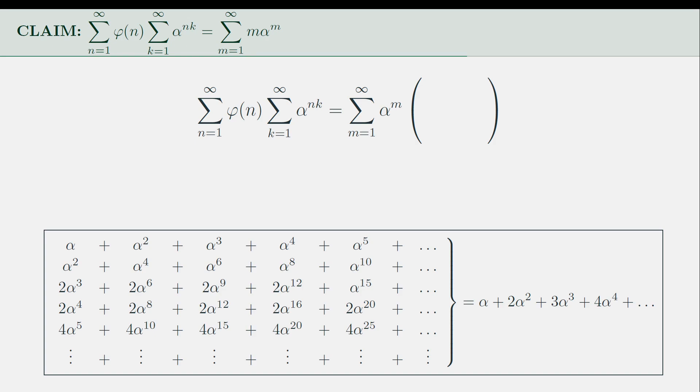For example, we can ask, when do we see α^4? We've already pointed it out a while ago, and the answer is that it shows when n equals 1, 2 and 4. In other words, it appears where 4 is a multiple of n, or in other words, where values of n are divisors of 4.